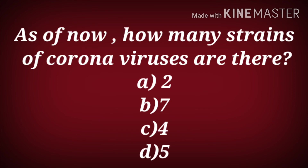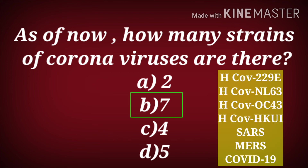As of now, how many strains of coronaviruses are there? Is it 2, 7, 4, or 5? The correct answer is 7.